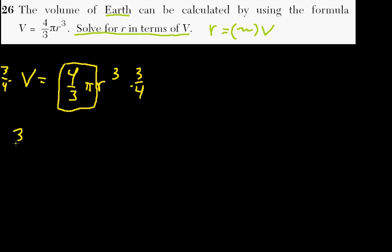So now we have three over four times volume equals, and threes cancel out, fours cancel out, and we have pi r to the third.